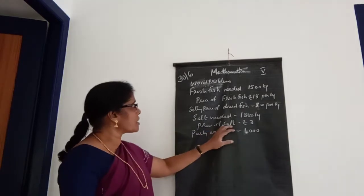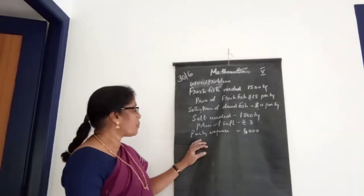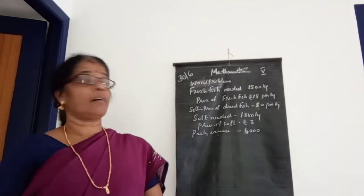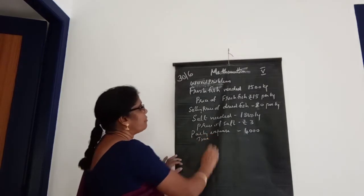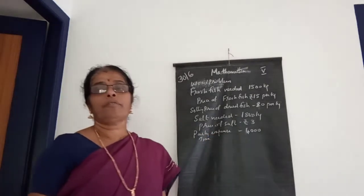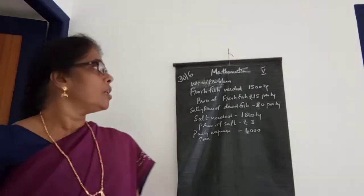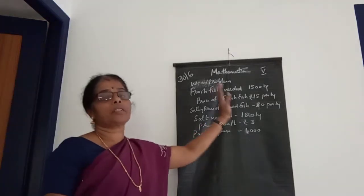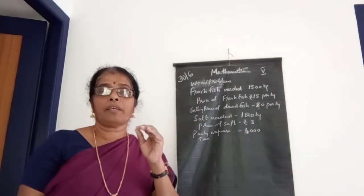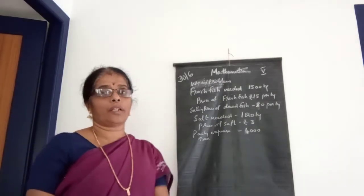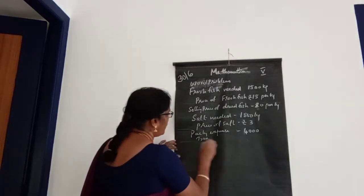The price of salt is 3 rupees per kilogram. There are also packing and travelling expenses, for which 4000 rupees is needed. So first we can find out the profit for 15 kilograms, and then scale up.